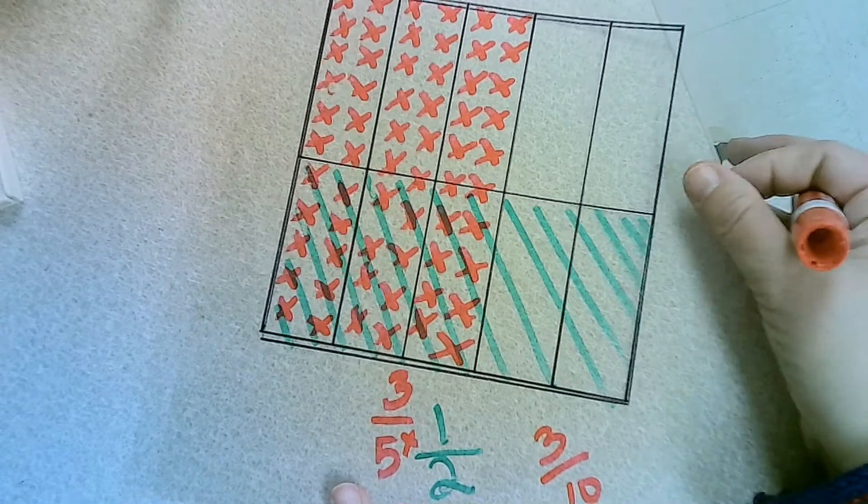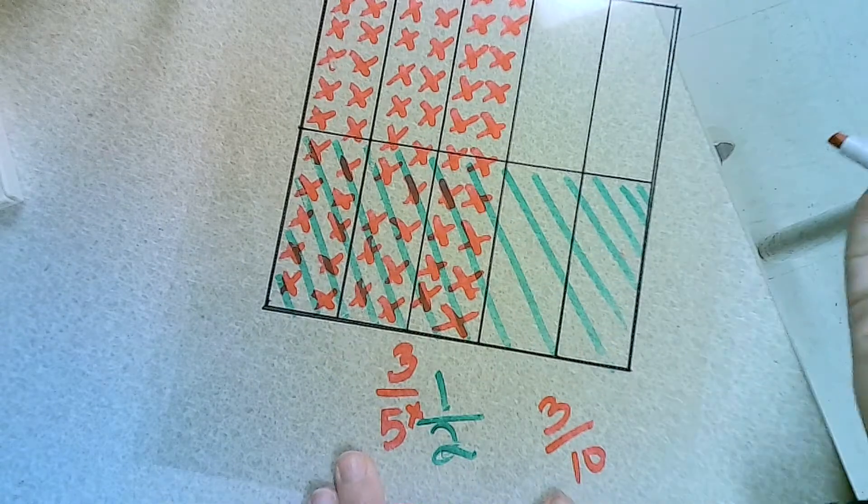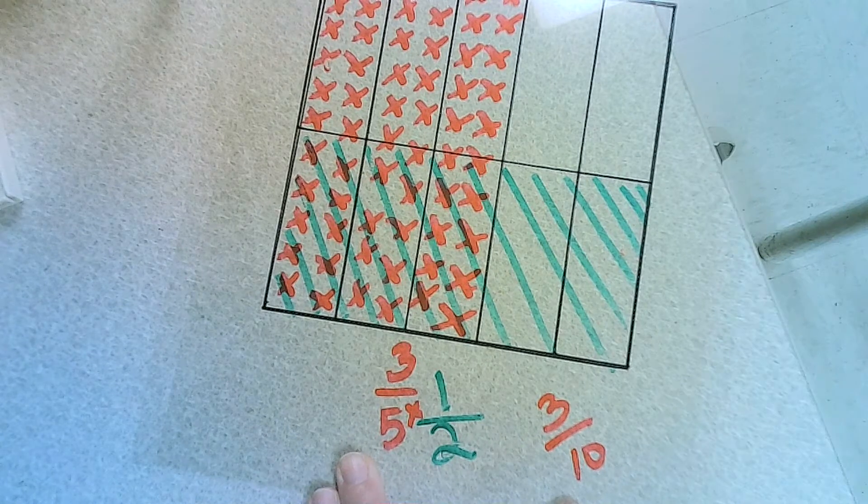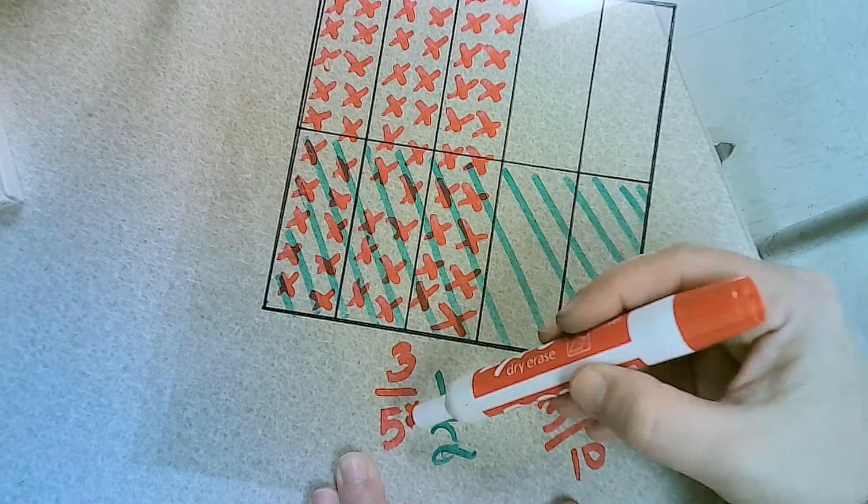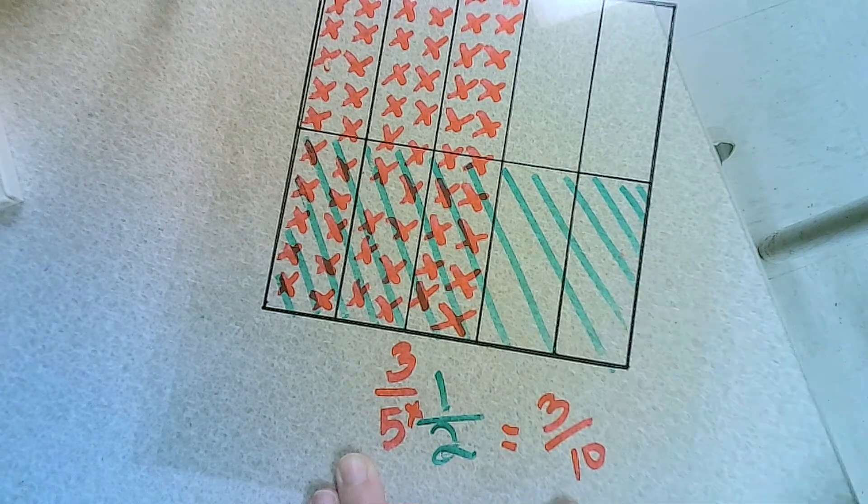And that is how you look at the models. Now, whether you know it or not, you've already multiplied by finding equivalent fractions. You just multiply straight across. 3 times 1 is 3. 5 times 2 is 10. And so our model matches our math.